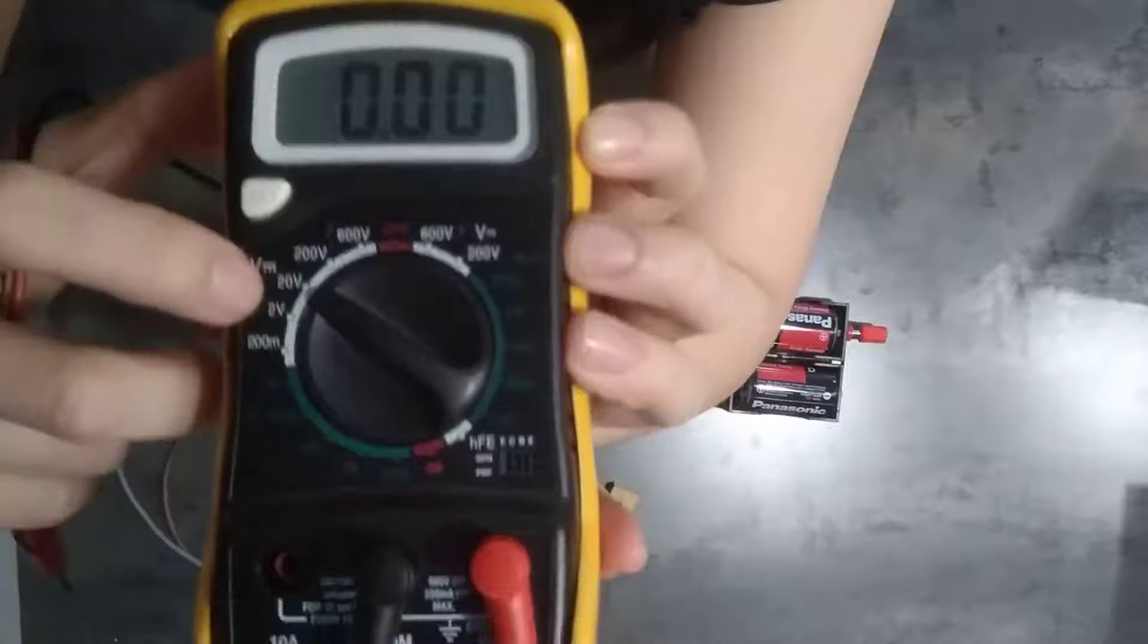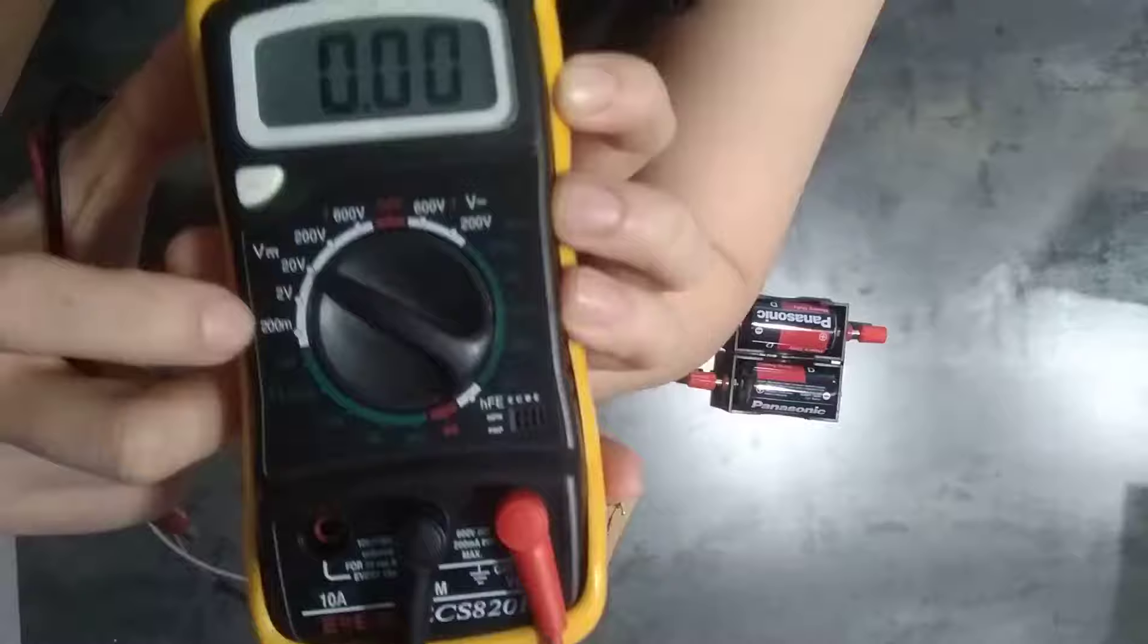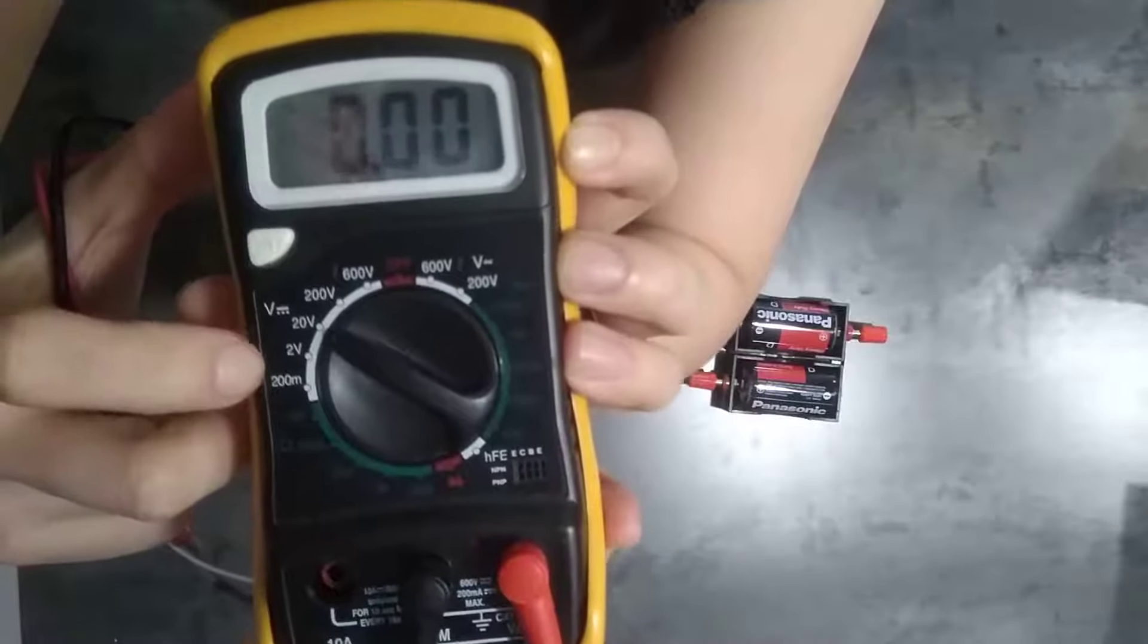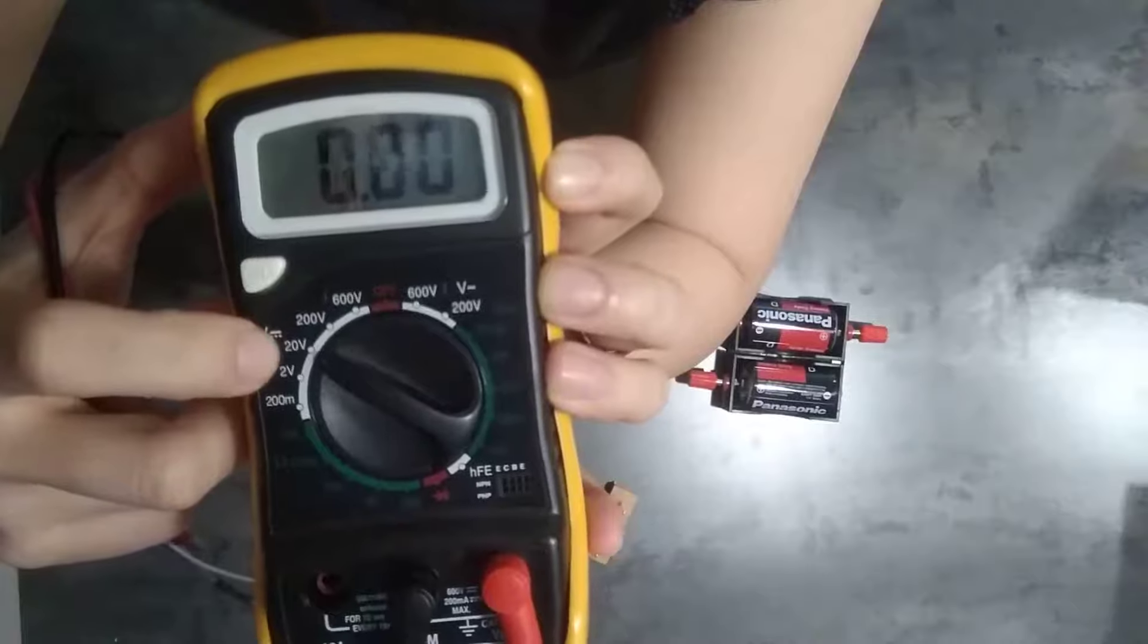The reading here shows the maximum value. So for example, for this one, the maximum reading will be 200 millivolt, maximum reading 2 volt, maximum reading 20 volt, and so on.